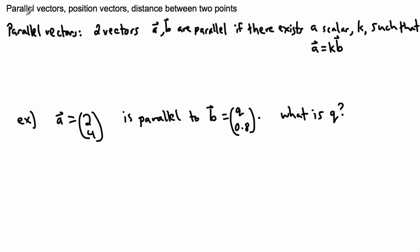We can work with parallel vectors because we know that two vectors, a and b, are parallel. Here's the definition: if there exists a scalar k such that a equals kb. This is the definition we need to work with.